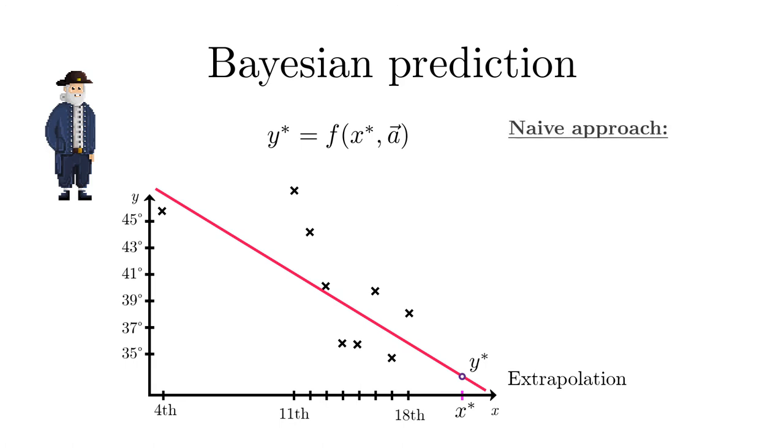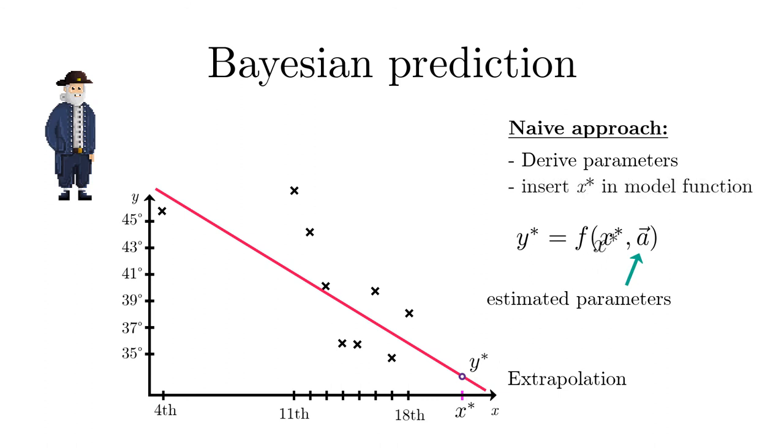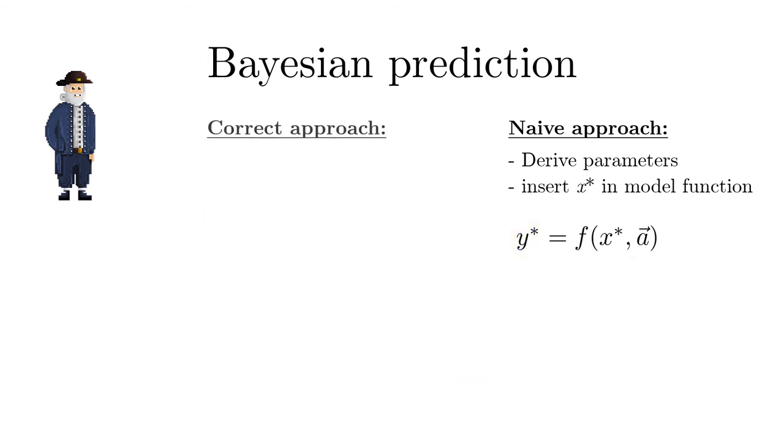The naive and inconsistent approach would be to replace the unknown parameters by the estimated ones and just insert X star in the model function. The correct approach, however, is to determine the probability density for the function value Y star given the data.